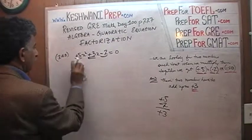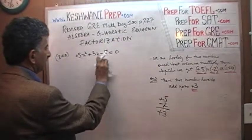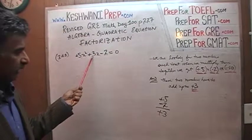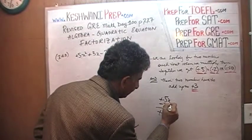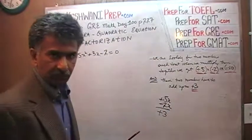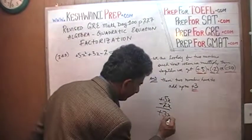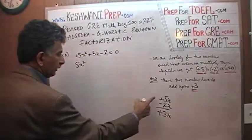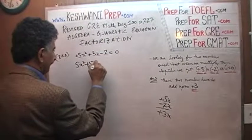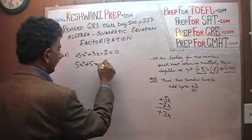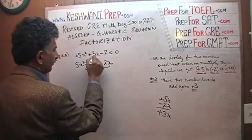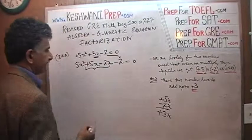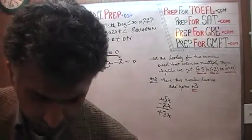So we are going to break up positive 3x and express it as positive 5x minus 2x, since 5x minus 2x gives us 3x. The equation becomes: 5x squared plus 5x minus 2x minus 2 equals 0.